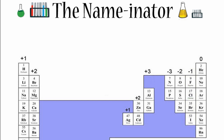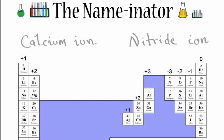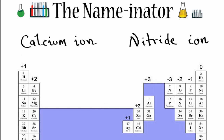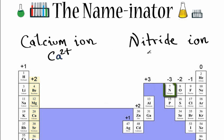Pause for a second and write the chemical formula for each of the following ions. You should have written Ca2+ for the calcium ion, and then the nitride ion is N3 minus.